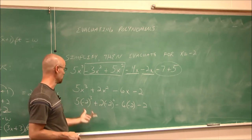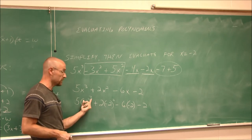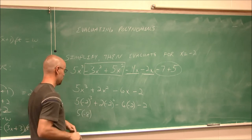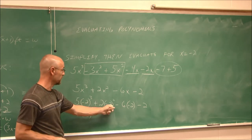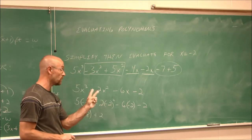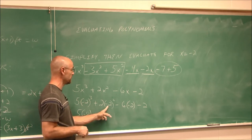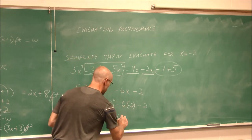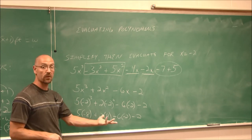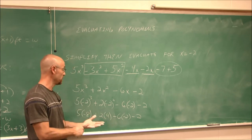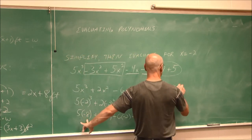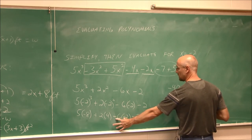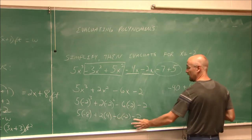Using order of operations, I work within the parentheses first. Negative 2 cubed: three negatives multiplied gives negative 8. Negative 2 squared: two negatives multiplied give a positive, and 2 times 2 is 4. For the negative 6 times negative 2 term, there's no exponent. Now I do the multiplication first: 5 times negative 8 is negative 40. 2 times 4 is 8. Negative 6 times negative 2 gives positive 12, then minus 2.